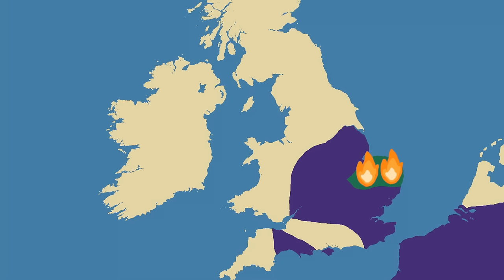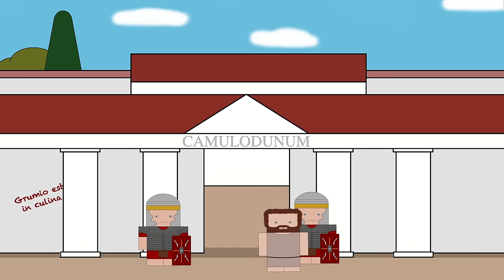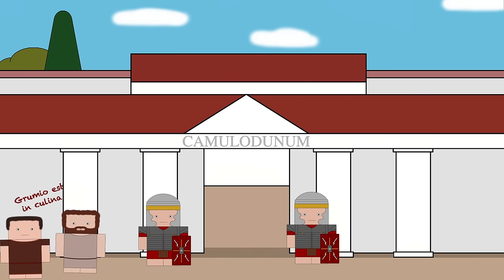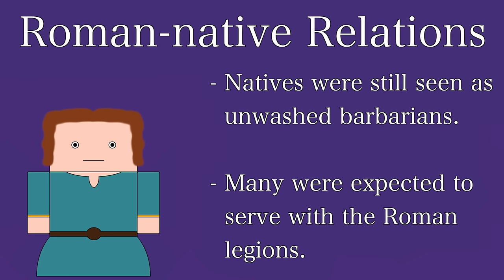In response, the Iceni revolted but were quickly crushed. Importantly, around this time was the founding of Londinium, later London. The next decade saw large-scale urbanisation and the beginning of a coin-based economy, as opposed to the barter economy that had preceded it. Camulodunum ballooned in population as well as becoming a very important Roman cultural centre. The natives who lived under Roman rule were subject to taxation and conscription as well as discrimination.